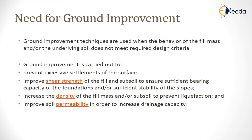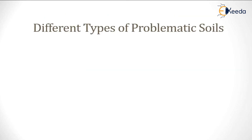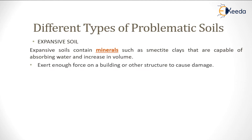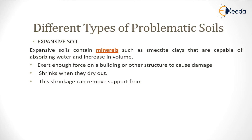Those are the key reasons for ground improvement. Now let's look at the different types of problematic soil in detail. First is expansive soil. Expansive soil contains minerals capable of absorbing water, which causes it to increase in volume. This increased volume applies additional force to the building and causes damage. Similarly, when it dries out, it shrinks dramatically.